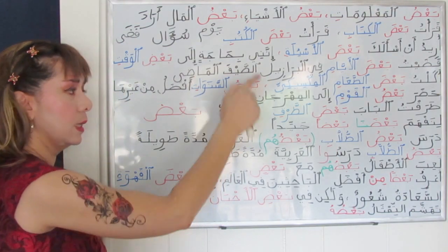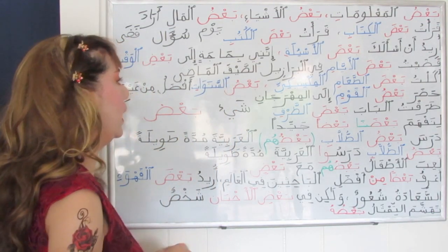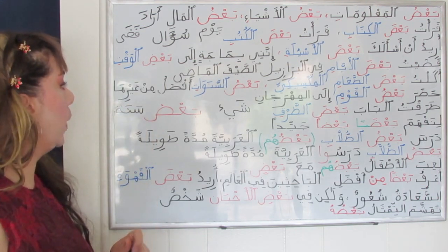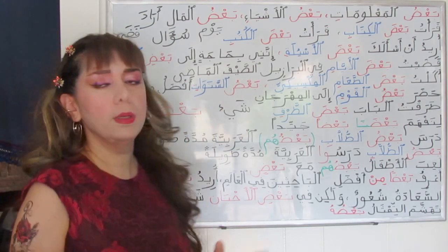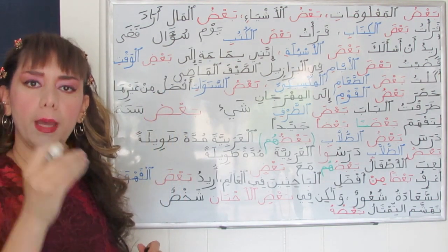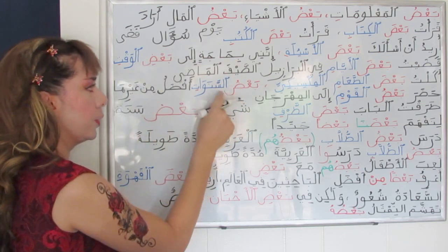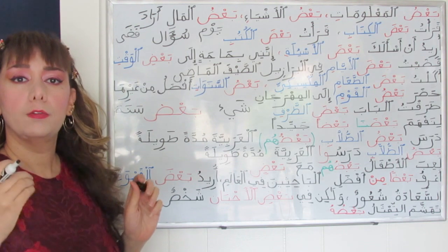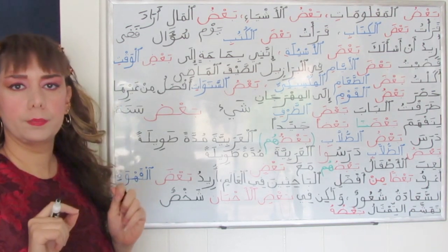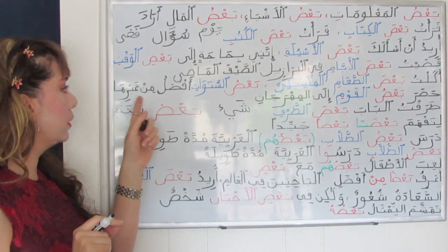Ba'du al-sanawati — some years — is the subject of the verb, so it is in the nominative case with a single damma. Sanawat is the plural of sana, meaning 'a year.' Some years are better — afdalu — than others — min ghayriha. Afdal is an elative adjective meaning 'better.' The pronoun 'ha' refers to sanawat. Even though sanawat is a feminine plural, since it is non-human, its returning pronoun will be singular feminine.